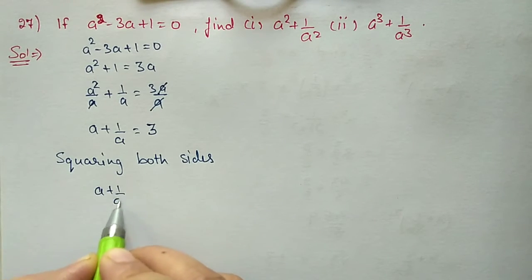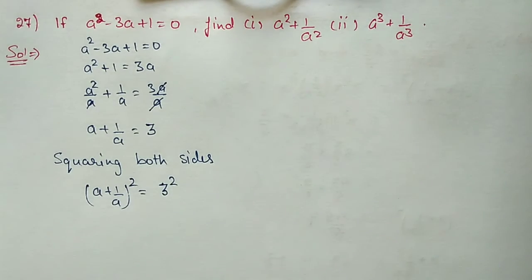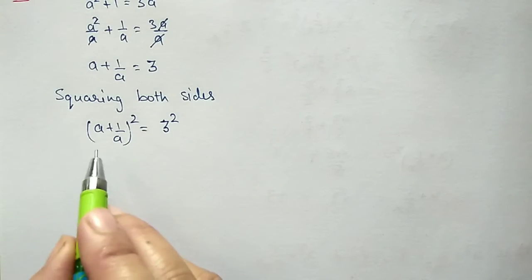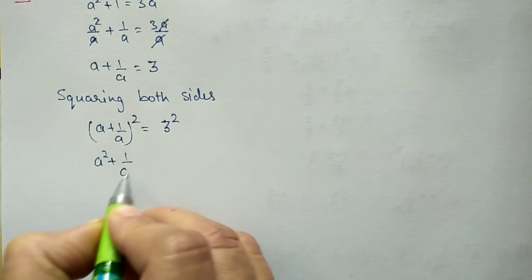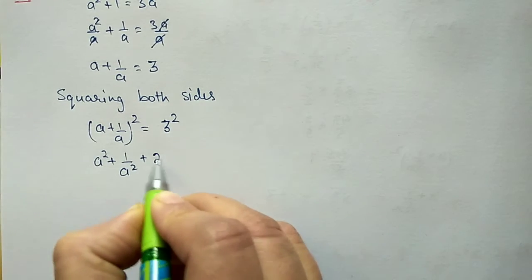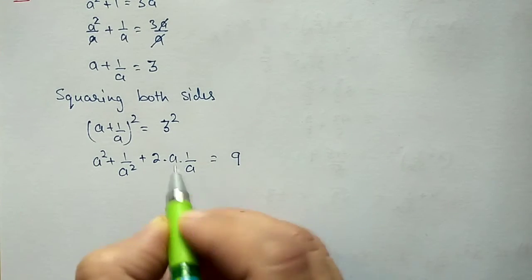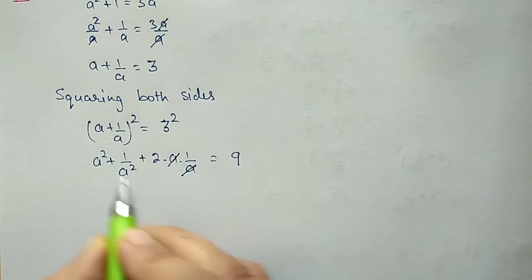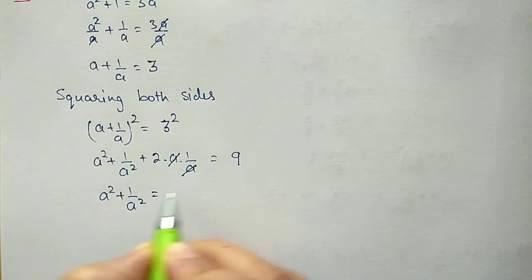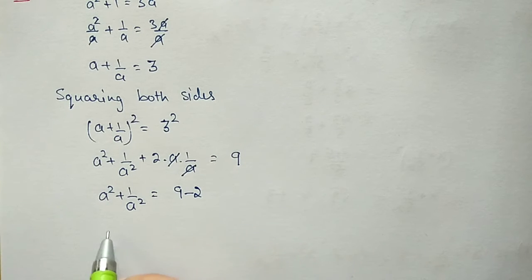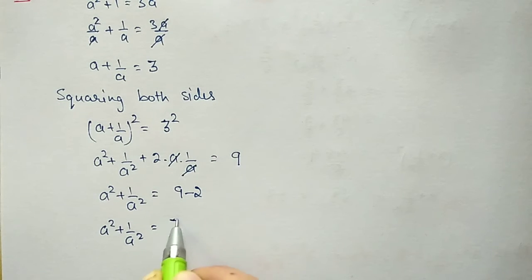(a + 1/a)² = 3². On the left side, using the (a + b)² formula: a² + 1/a² + 2 × a × 1/a = 9. The a terms cancel, so a² + 1/a² + 2 = 9, meaning a² + 1/a² = 7. This is our first part.